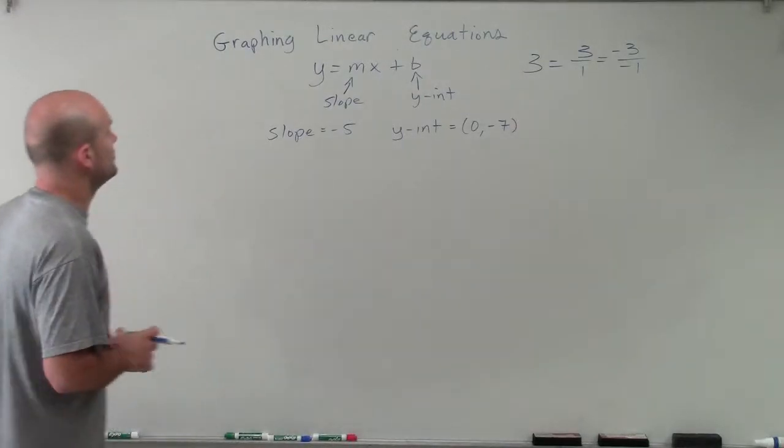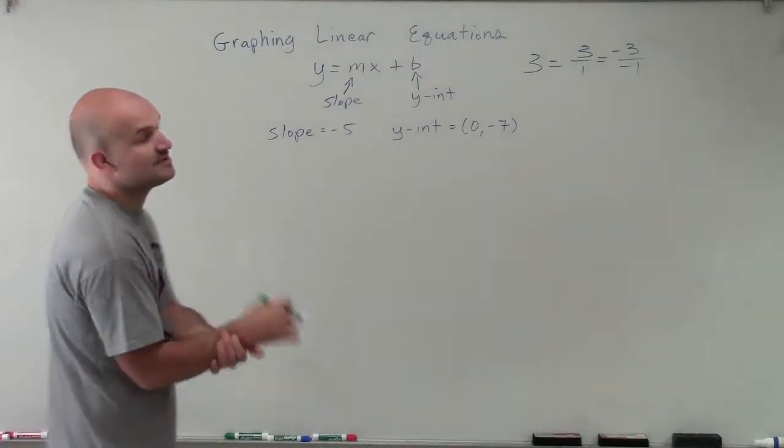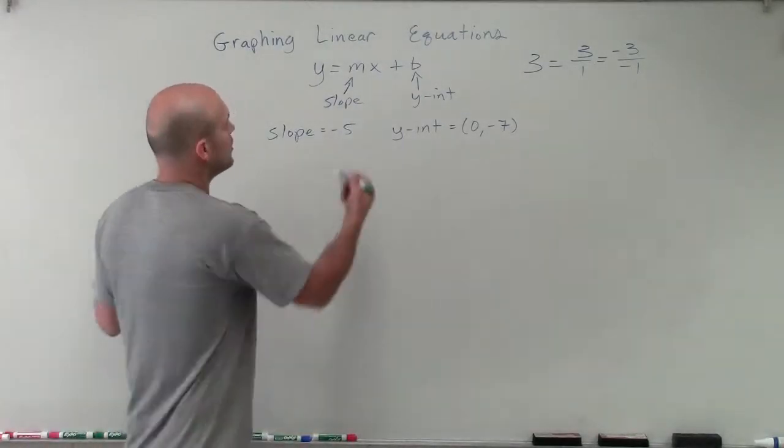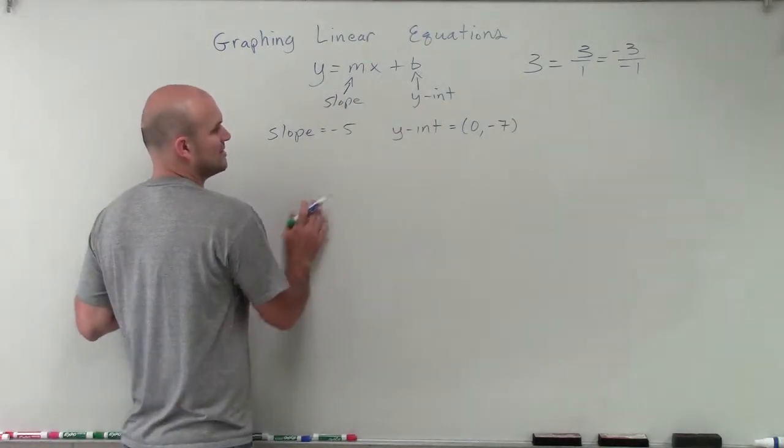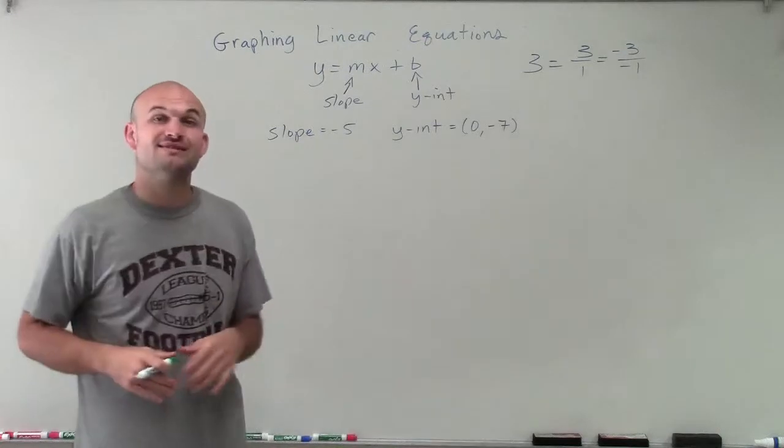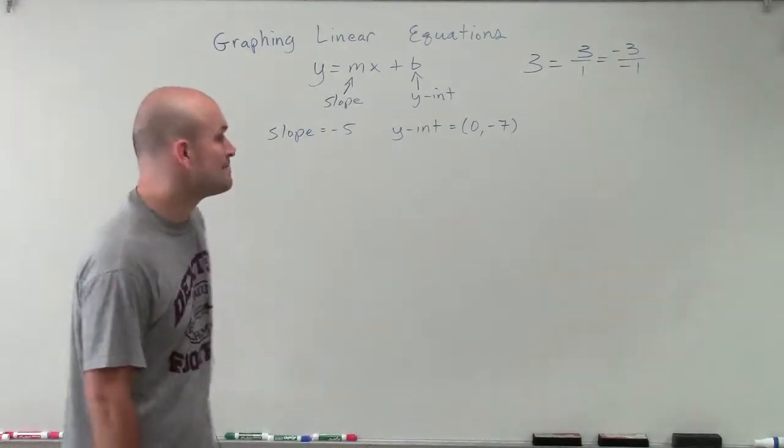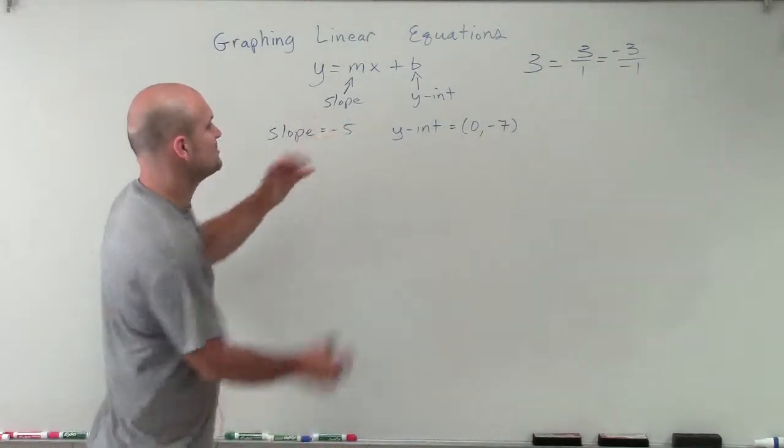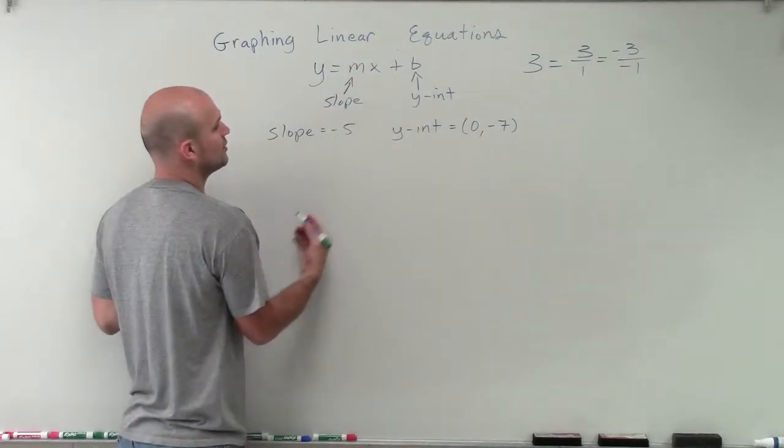OK. So what we're going to do is I want to show you how to graph this by using our slope-intercept form. So rather than giving an equation that's in slope-intercept form, we're just giving the information slope is negative 5 and the y-intercept is negative 7. But we can still go ahead and graph this.